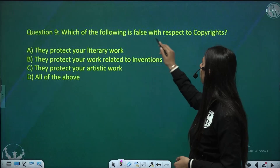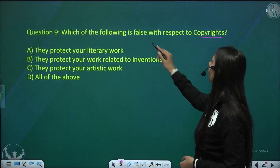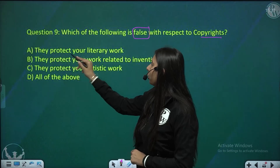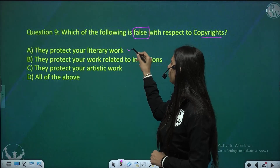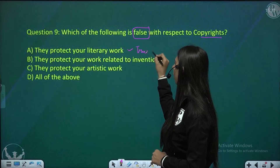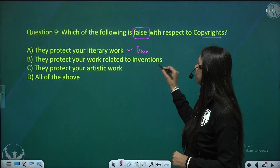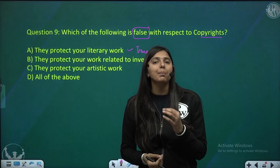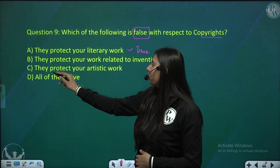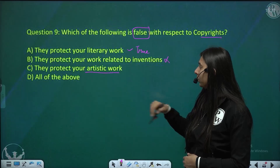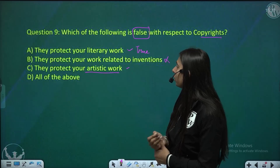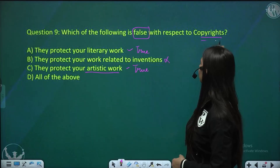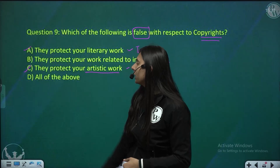Question 9: which of the following is false with respect to copyright? Option A — they protect your literary work — that is true. Option B — they protect your work related to inventions — no, inventions are protected by patents, so this is false. Option C — they protect your artistic work — that is also true. So for copyrights, options A and C are correct, and option B is the false statement.